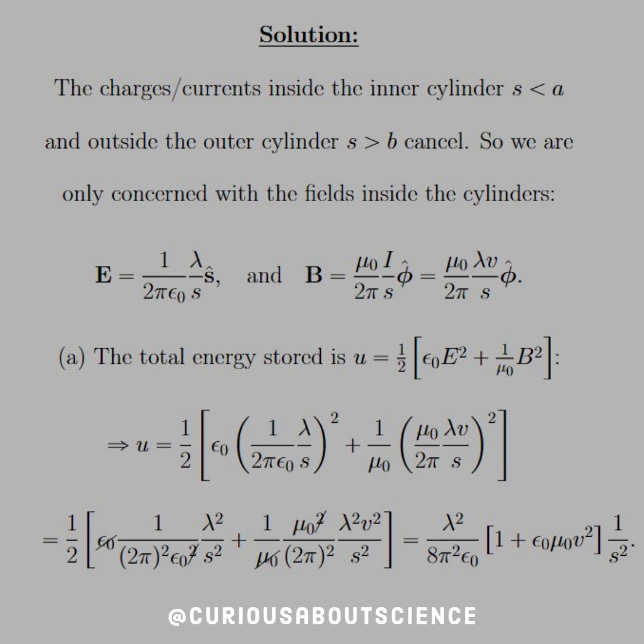Now that we have that, let's dive into part A. The total energy stored, this is a density, is little U equals 1 half epsilon naught E squared plus 1 over mu naught B squared. Now let's recall that the squares are representative of the dot product, so this is E dot E and B dot B. And since they're dot product themselves, all it is is the magnitude squared.